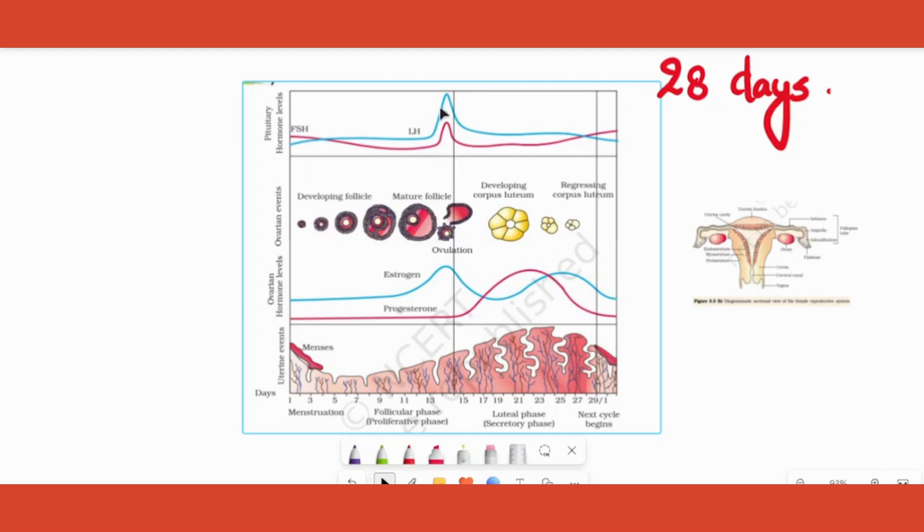As you reach the end of the follicular phase, the FSH level has become maximum. It is also the time that the ovum is going to be released from the ovary, and that is called as the ovulation. At that time, another hormone is very much peaking, which is LH, luteinizing hormone.